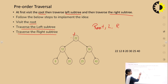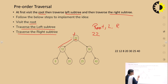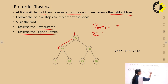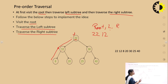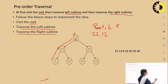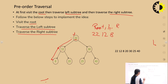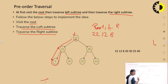Starting at the root, which is 22, we then traverse to the left child — that is 12. Then again traversing to the left, we get 8. We have now written 8. Then we traverse to the right child of 12, which is 20. Coming back, we write 22, then traverse to the right child of the root, which is 30. Then we go to the left child of 30, which is 25. This is the preorder traversal result.